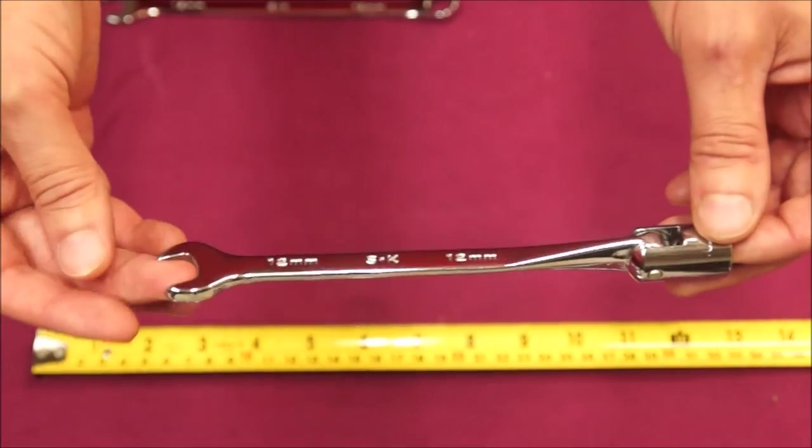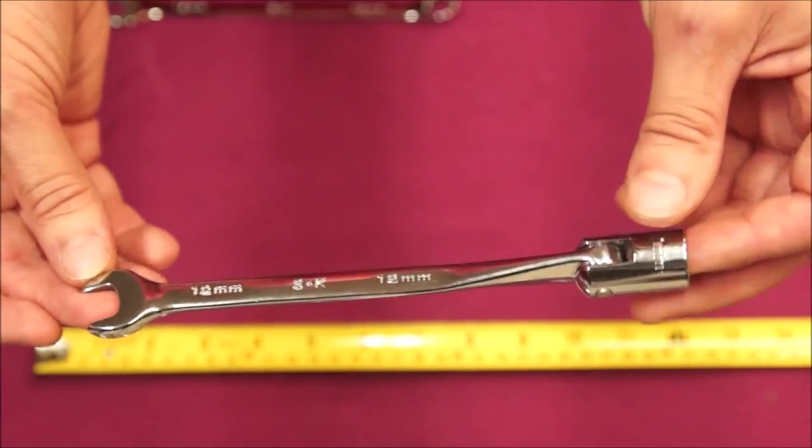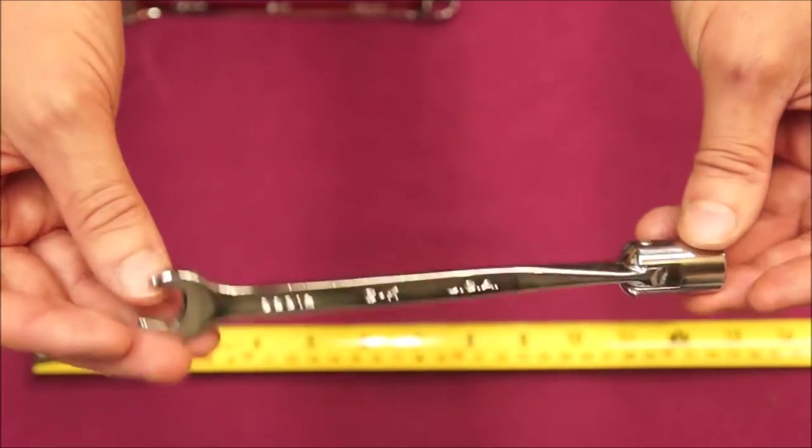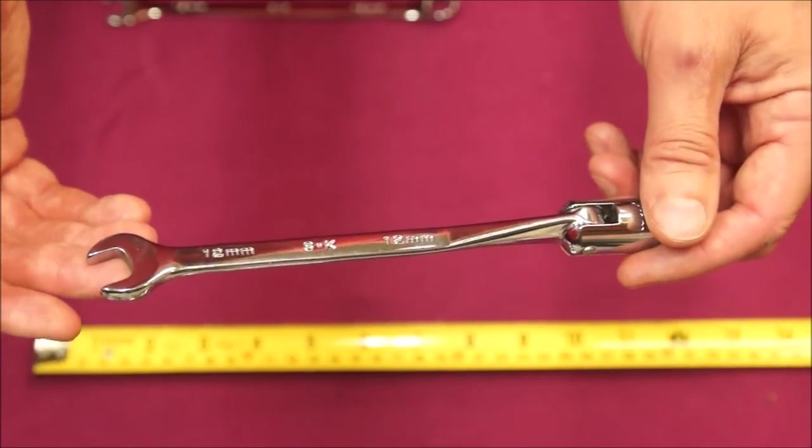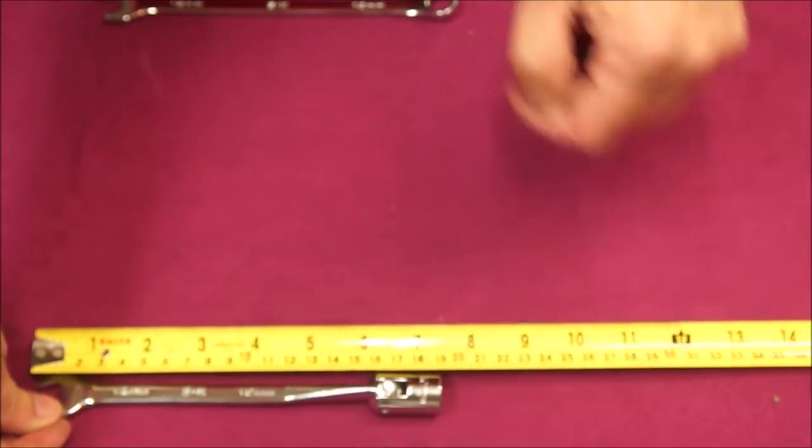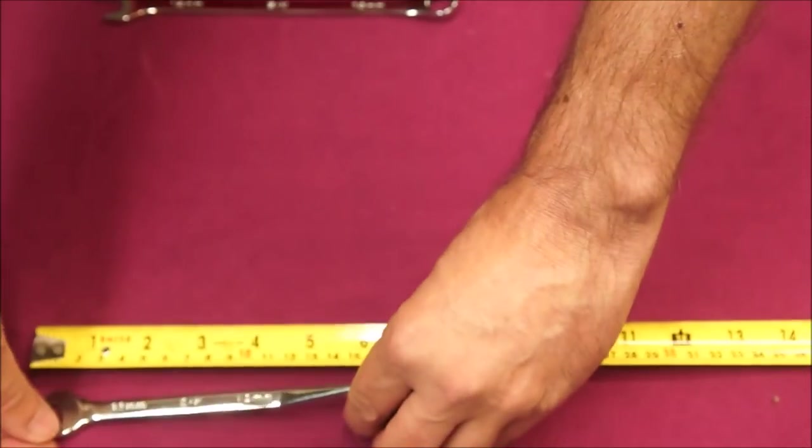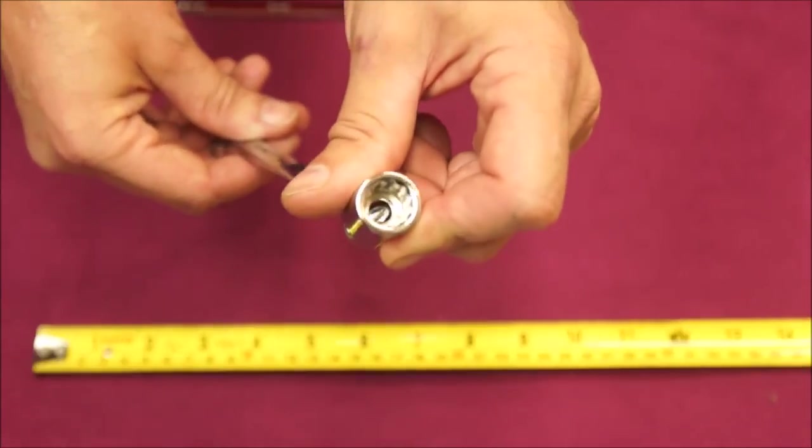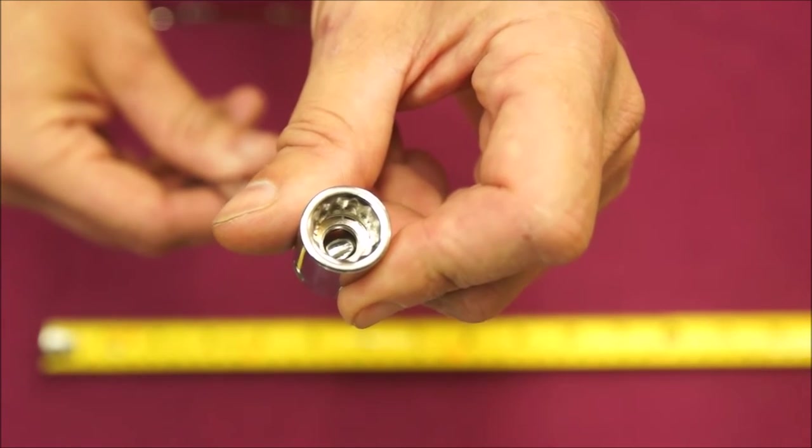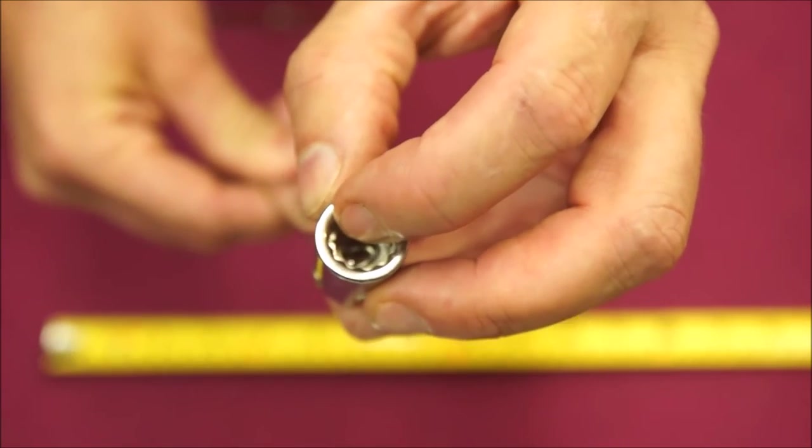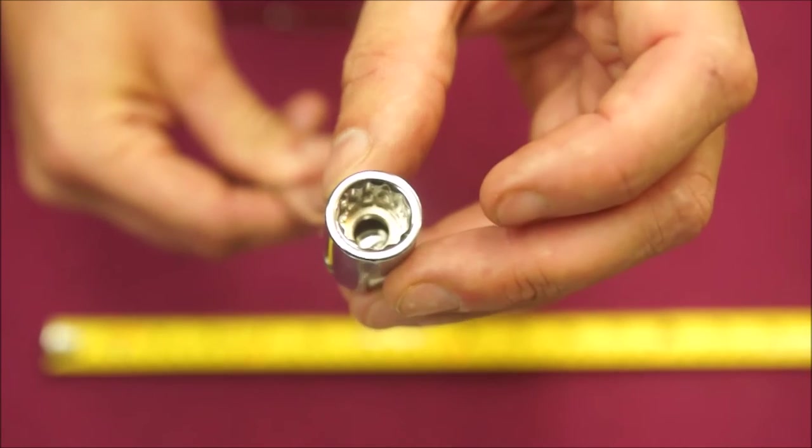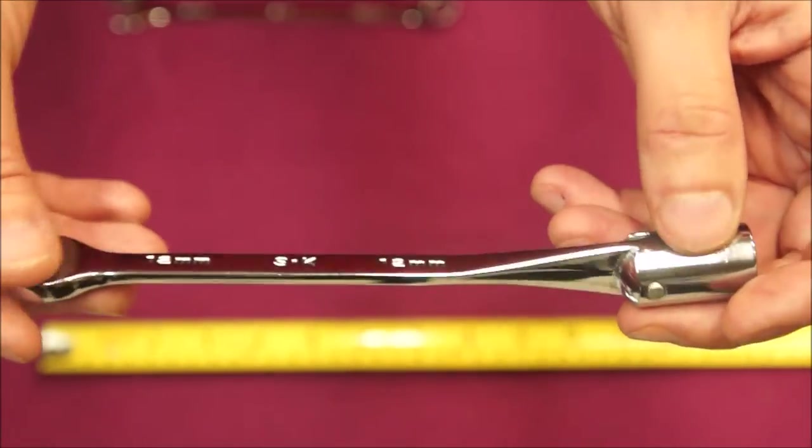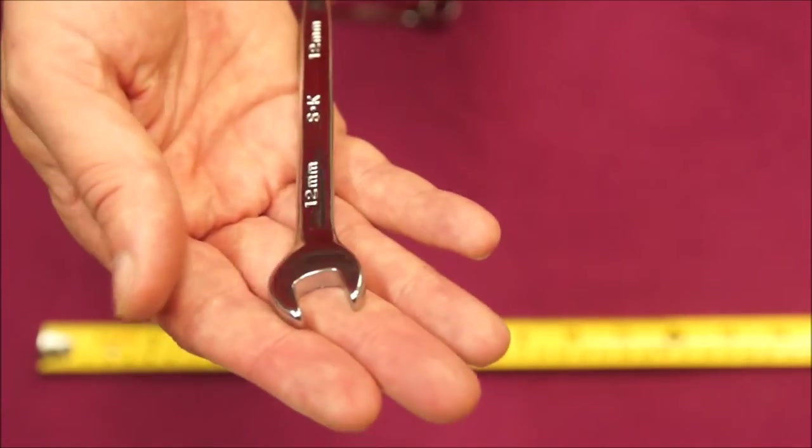Next, this is an SK made in the USA. It has a flex socket on the box side. A Super Chrome model, nice chrome finish on these. Here's your overall length. On the socket end these are 12 point. It's a pretty wide area. I would not consider that a thin wall socket. Again, a nice made in the USA wrench.